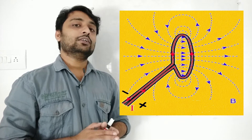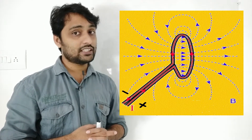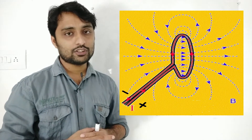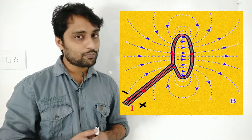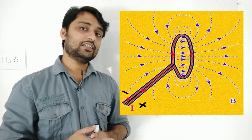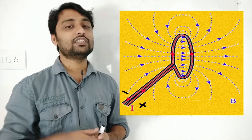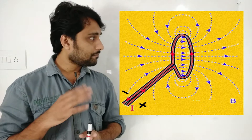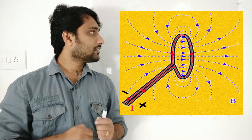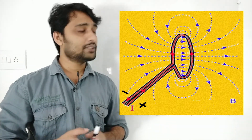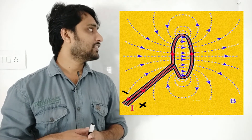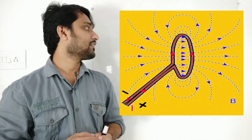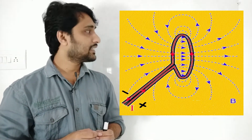So these are the factors that determine the magnetic strength of the circular loop. One is the radius, which is inversely proportional to the magnetic field. Another is the intensity of the current — if we increase the intensity of the current, the magnetic strength will also increase; if we decrease it, the magnetic strength will also decrease.